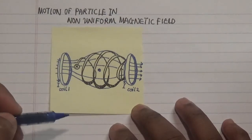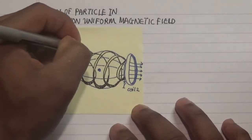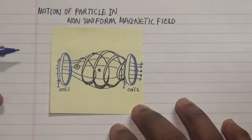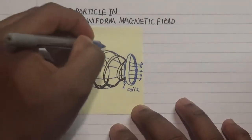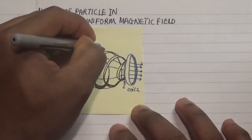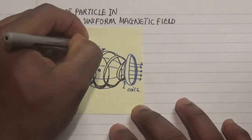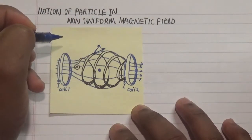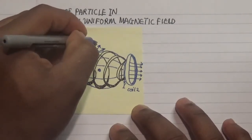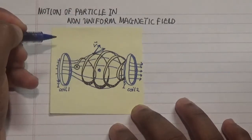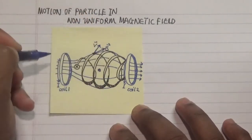Let's pick a reference point here. If the particle is moving in this direction and the magnetic field is moving in this way, then the tangent of the curve gives us the velocity. This tangent velocity is shown here, and this arrow represents our magnetic field at that particular point.